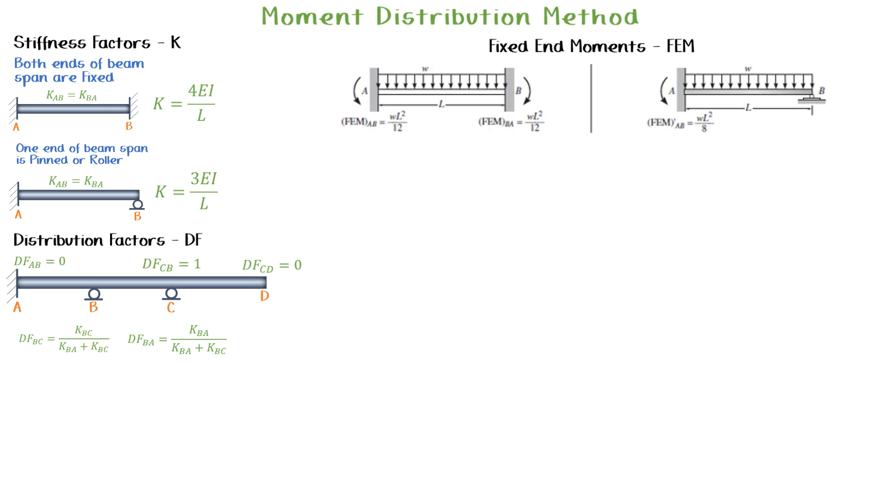The fourth step is to distribute the moment at each node to the adjacent spans. We need to do this with the following equation.